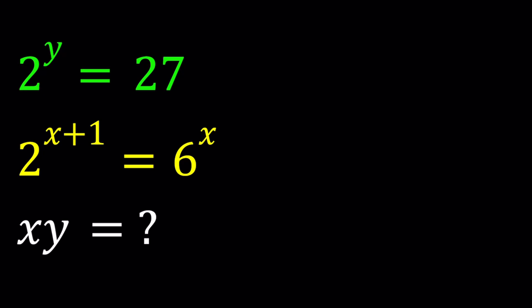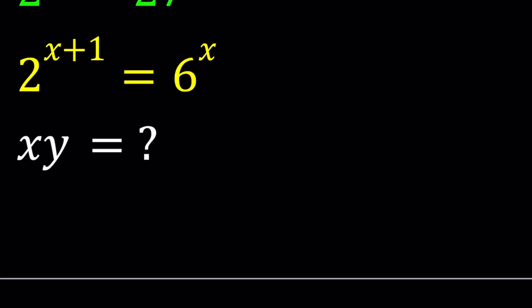So we have 2 to the power Y equals 27, and 2 to the power X plus 1 equals 6 to the power X, and we're supposed to evaluate X times Y. I could probably come up with a couple different methods.